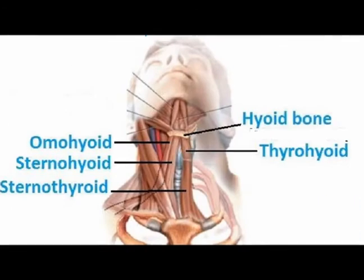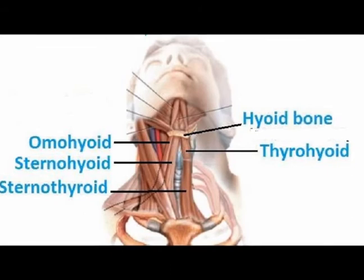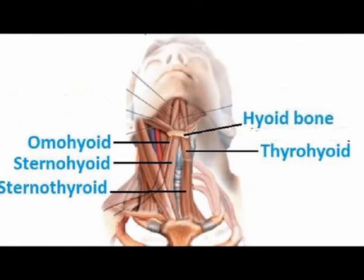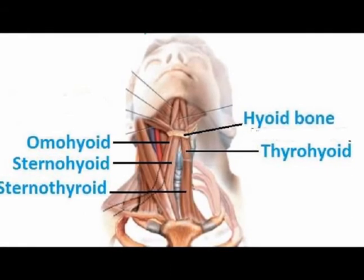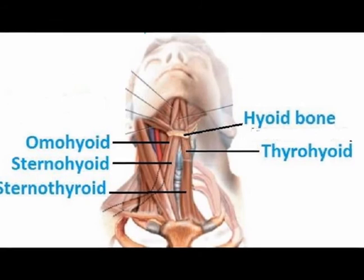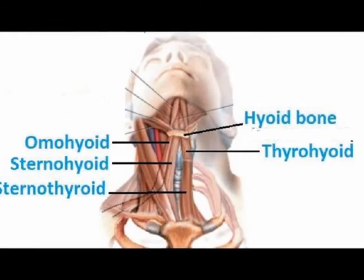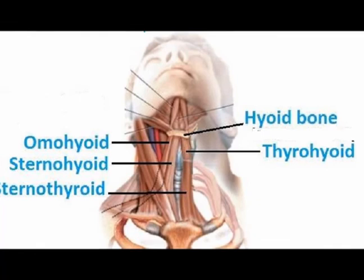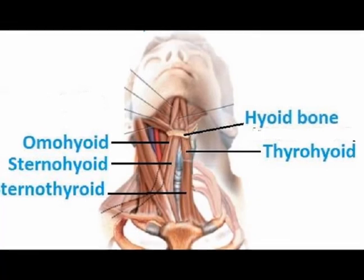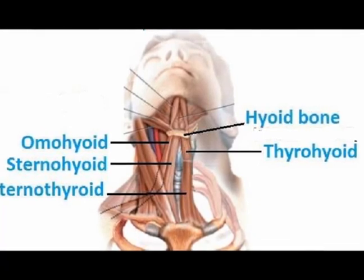Again, the infrahyoid muscles are a group of four muscles whose primary function is to depress the hyoid bone during speech and swallowing. These four muscles are the omohyoid muscle, the sternohyoid muscle, the sternothyroid muscle, and the thyrohyoid muscle.